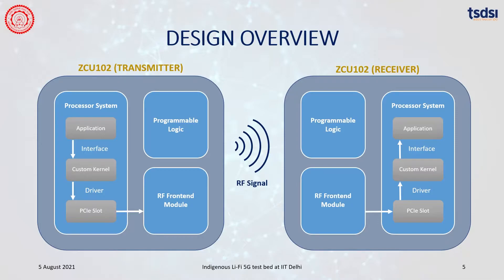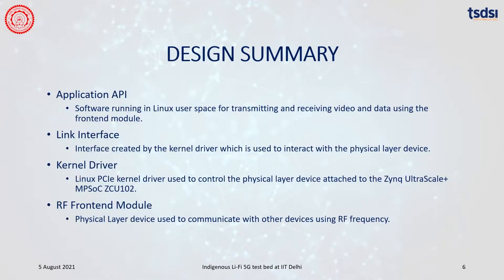The application is developed for the Linux platform and runs on the Linux user space as the user application. It provides a command line user interface for controlling and communicating with the frontend module. To summarize, the VLC uplink design comprises three major components: a Linux user application for the users to control and communicate with the link interface; a custom kernel which provides the link interface between the user application and the PCIe driver; and the PCIe driver, which drives the RF frontend module — the physical layer device of the VLC uplink.